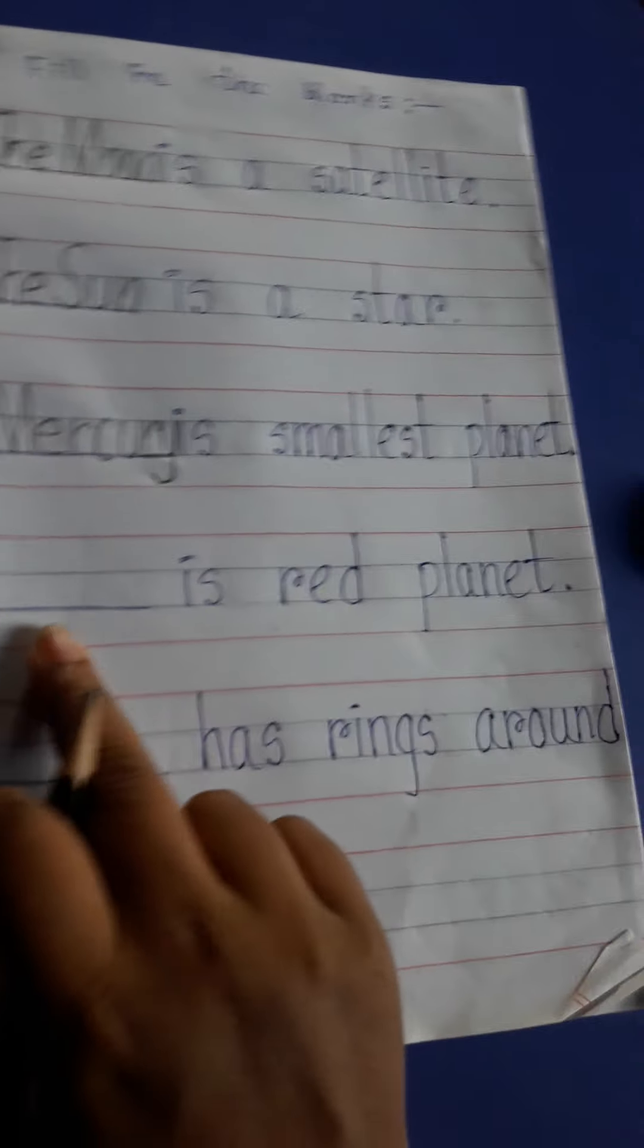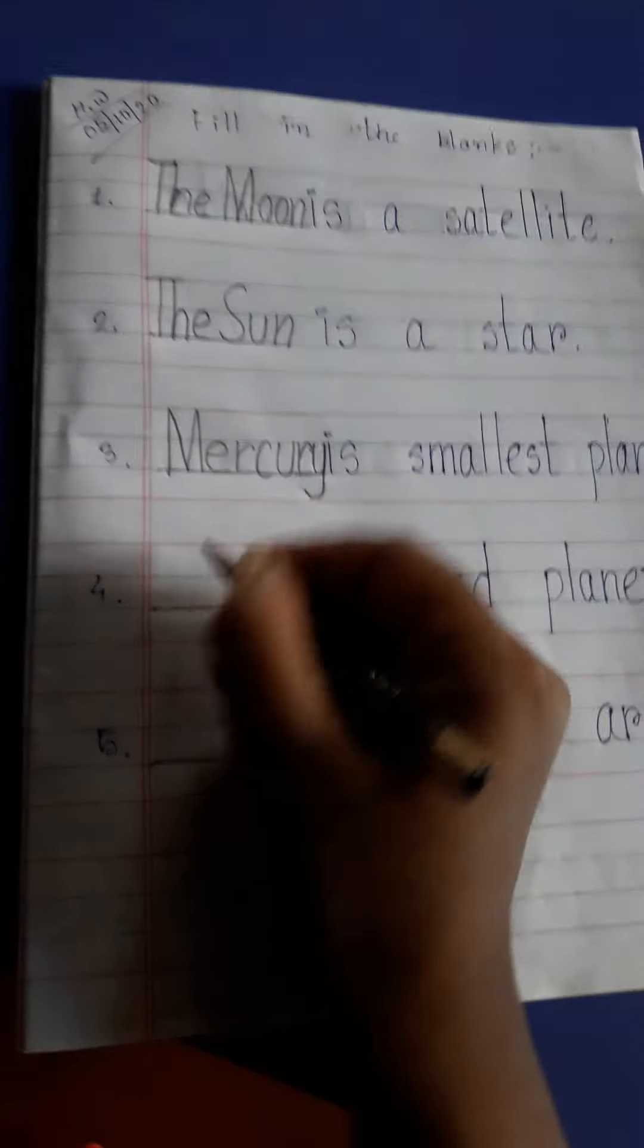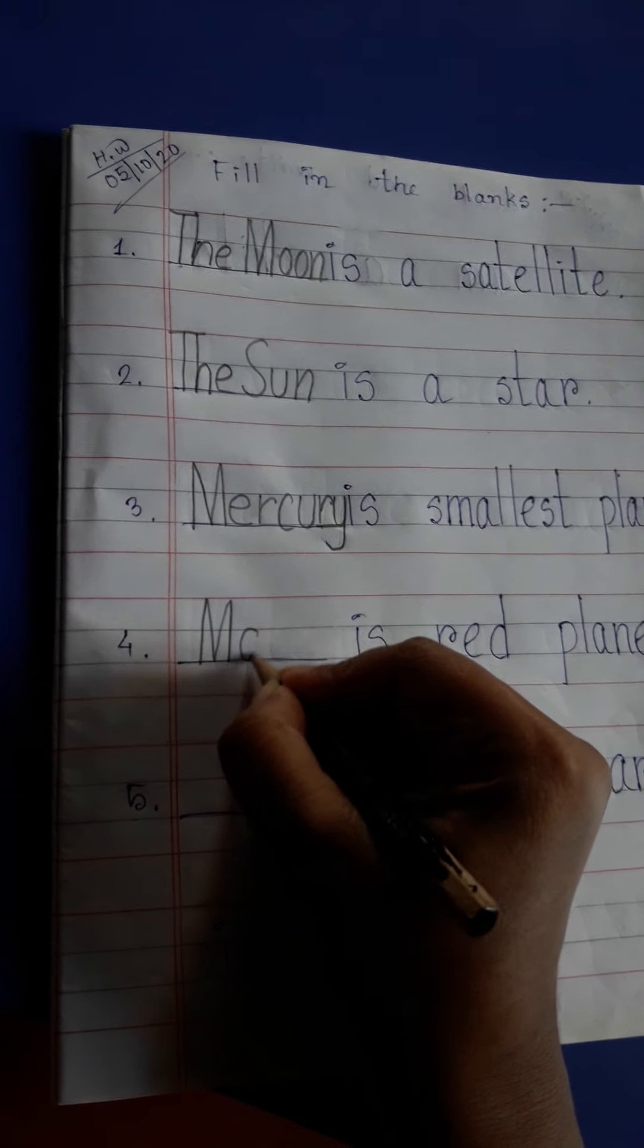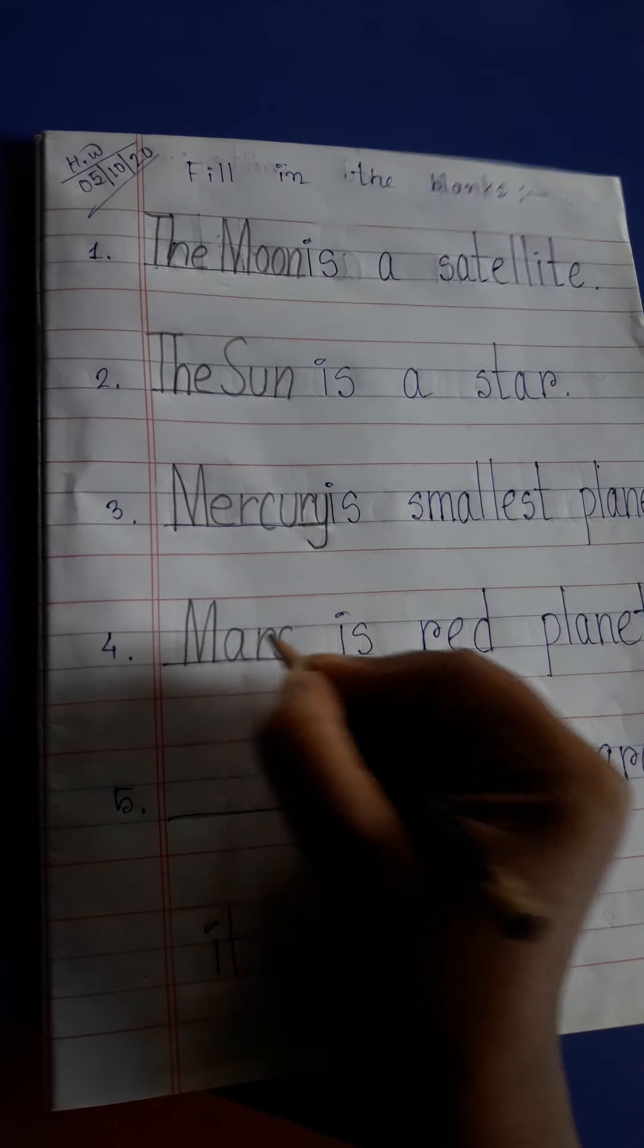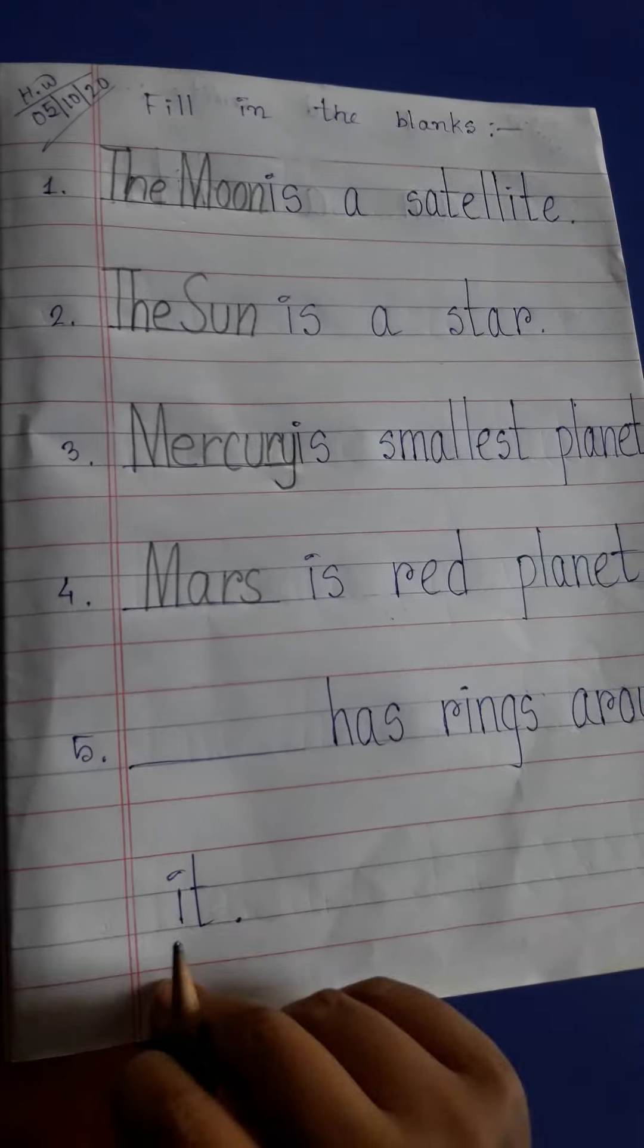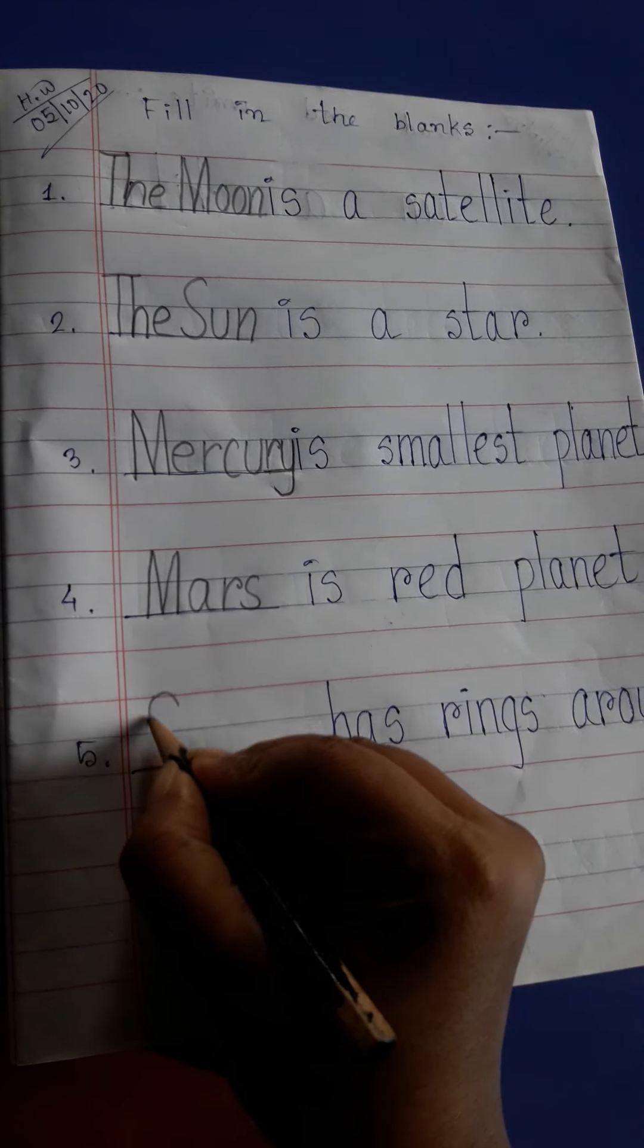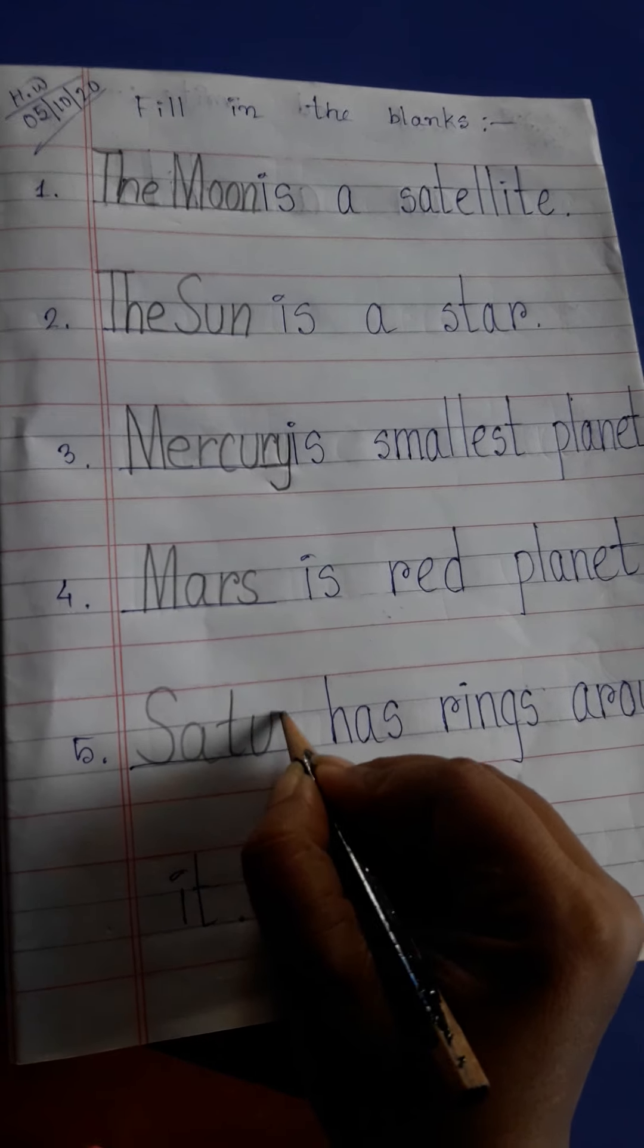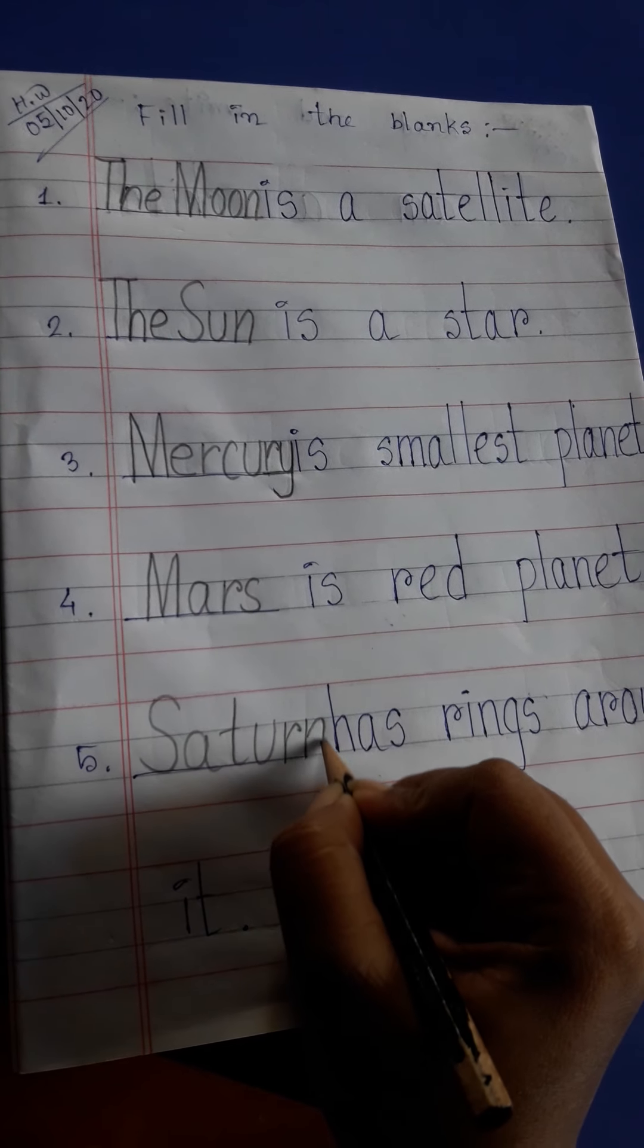Mars is red planet. M-A-R-S. Saturn has rings around it.